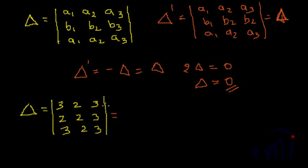So, let us expand by row 1, 3 multiplied by 2 into 3, 6 minus 6, minus 2 into 2 into 4, 4 minus 6 which is 3 into 2.